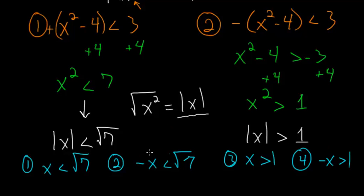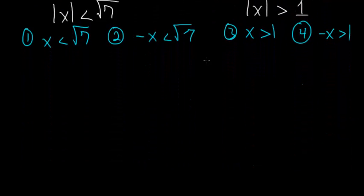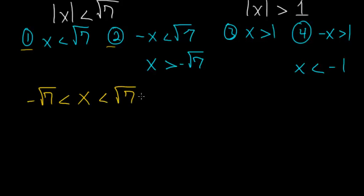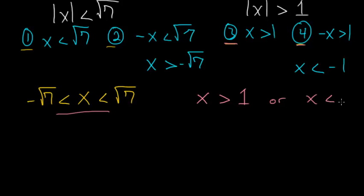Now we just need to get rid of the negatives. In Case 2, multiplying each side by negative 1 gives x is bigger than negative square root of 7. In Case 4, multiplying by negative 1 gives x is less than negative 1. Combining Cases 1 and 2 puts x in the middle: bigger than negative square root of 7 and smaller than square root of 7. Combining Cases 3 and 4, x has to be bigger than 1, or x has to be smaller than negative 1.